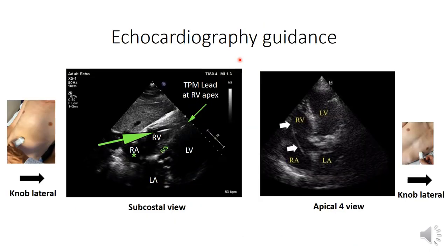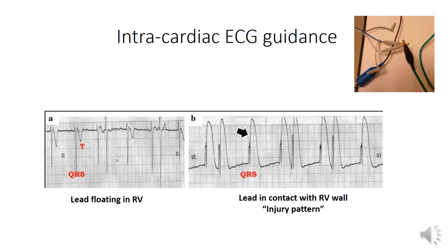For echocardiographic guidance — when we are in a hurry and cannot transfer the patient to the cath lab — we use the subcostal view by directing the probe toward three o'clock or laterally. This view shows the right atrium, tricuspid valve, and right ventricle, with the pacemaker lead traversing the tricuspid annulus toward the RV apex. A similar view can be obtained through the apical four-chamber view.